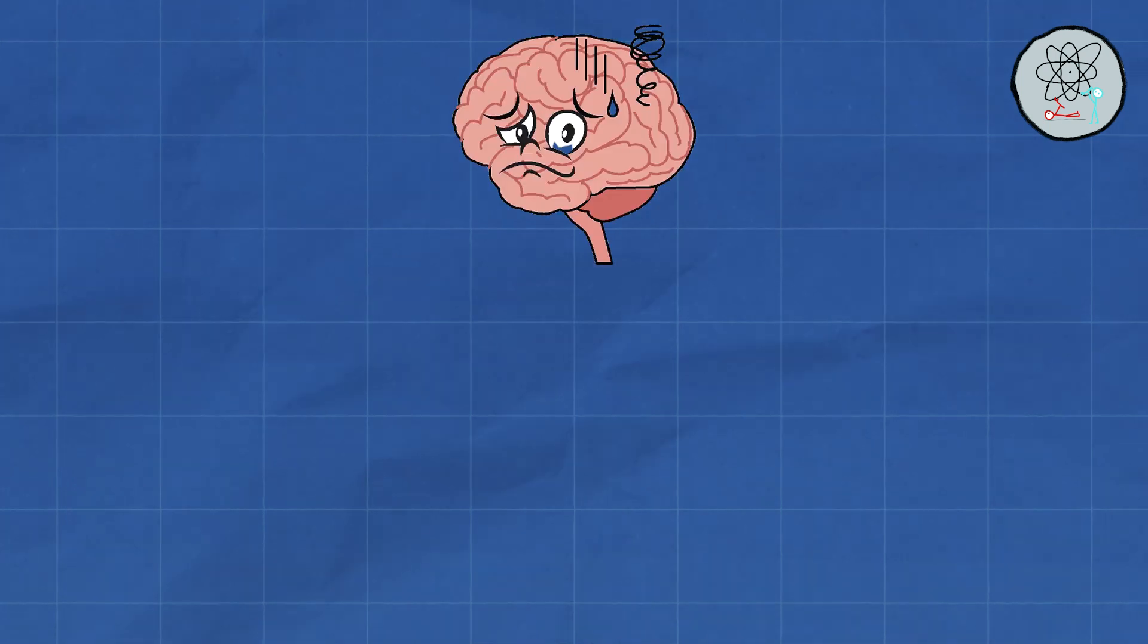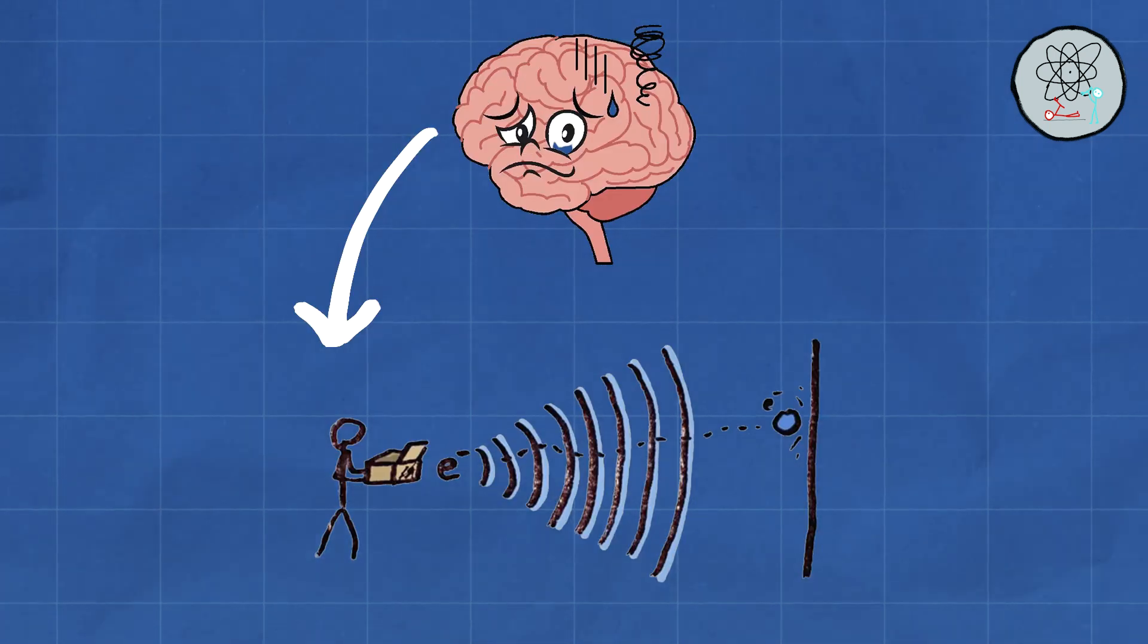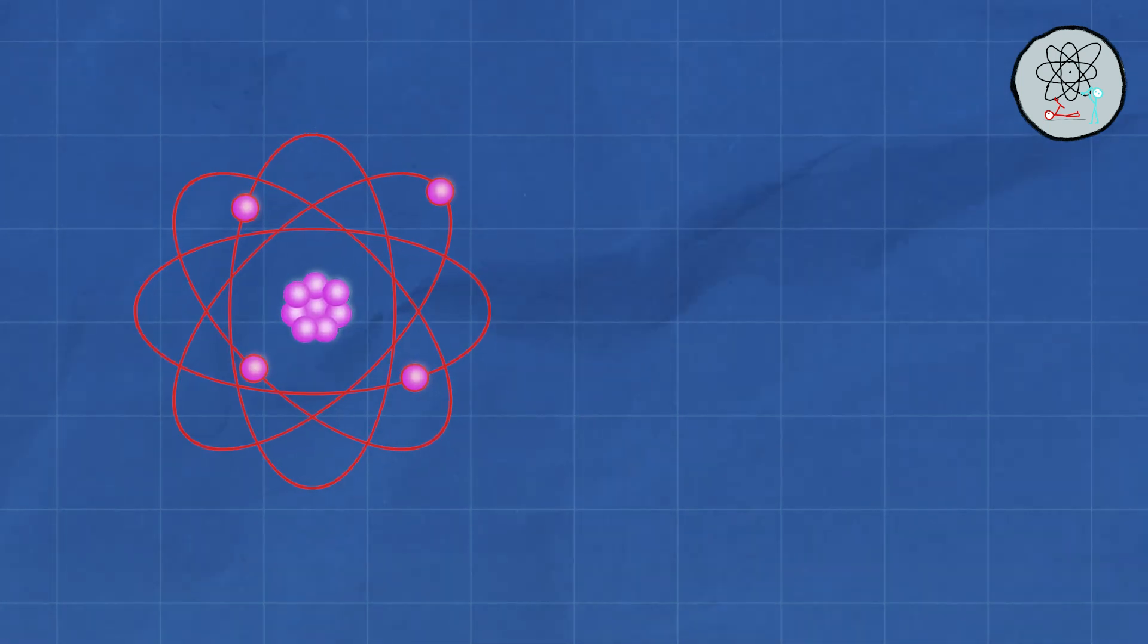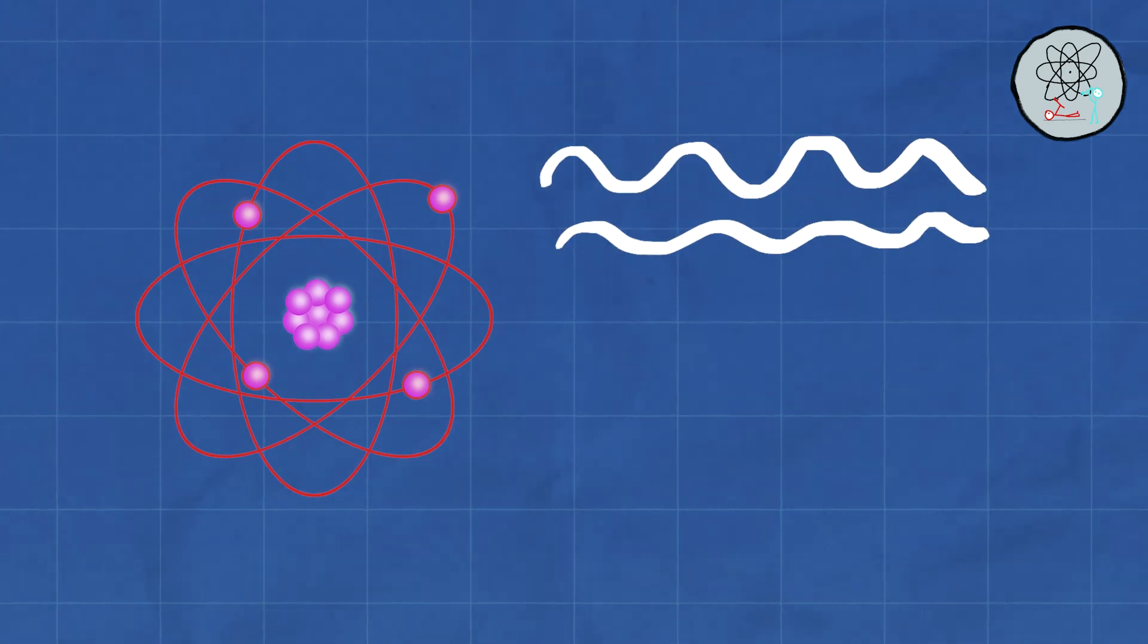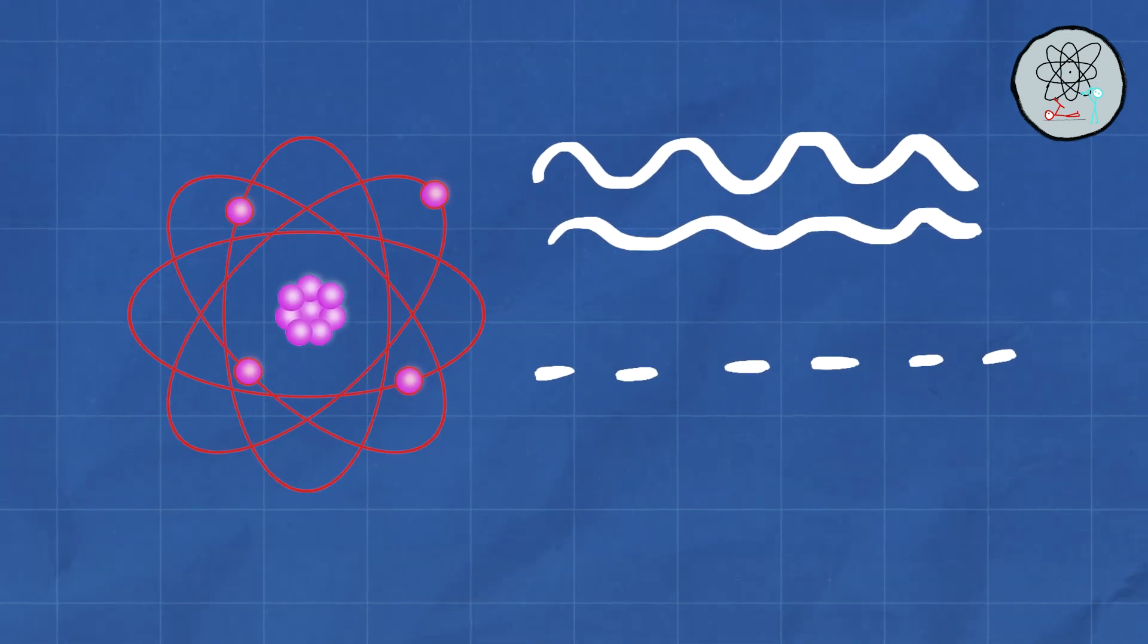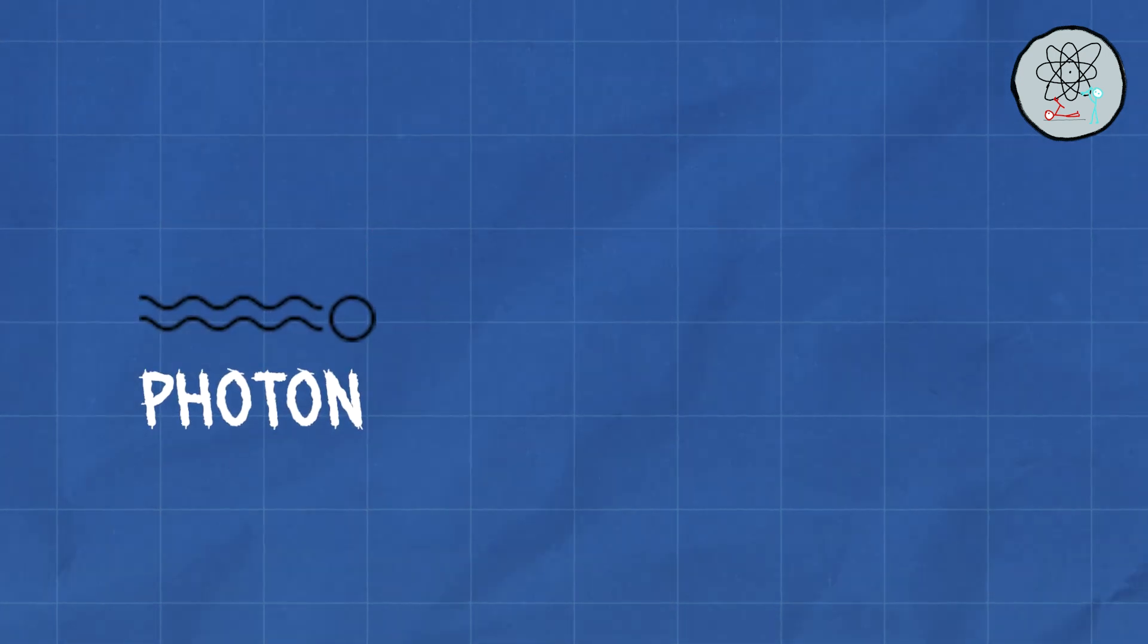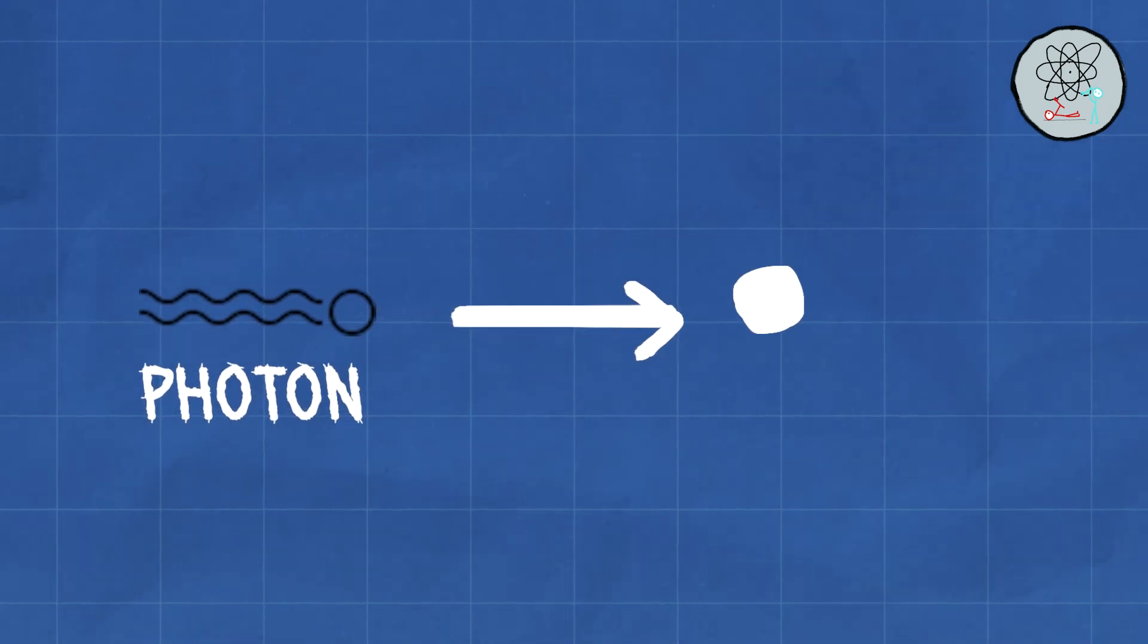Another mind-bender is wave-particle duality. Quantum particles can exhibit characteristics of both waves and particles, depending on the experiment. A single photon can act like a tiny ball, but it can also behave like a wave spreading out in space.